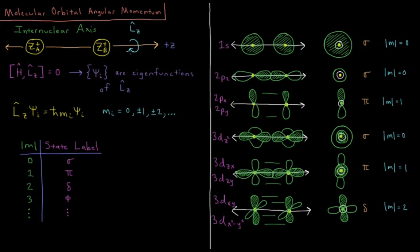So we have our LZ operator, which as we remember from the rigid rotor and the hydrogen atom tells us the angular momentum component around the Z direction or the angular momentum around the Z axis. So our Hamiltonian for a diatomic molecule is going to commute with the LZ operator which means that not only are our eigenfunctions of the Hamiltonian the wave functions,